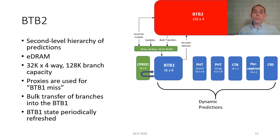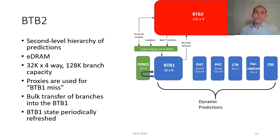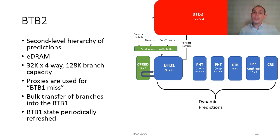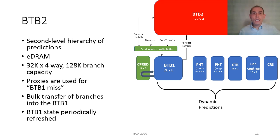Not directly contributing to a prediction bundle, but essentially extending the capacity of the B2B1, is the B2B2. It acts as a second-level hierarchy of prediction metadata, built using eDRAM cells for density, with a capacity of up to 128K branches. Knowing when to transfer branches from the B2B2 into the B2B1 can be tricky. Unlike a traditional level 2 cache accessed upon a level 1 miss, a miss in the B2B1 doesn't necessarily mean there is content in the B2B2 — it could just mean there are no branches within the 64-byte section of code. The branch predictor uses a proxy of three consecutive B2B1 misses to indicate a transfer. These branches are written into the B2B1 through the same read-analyze-write buffer. Even though all surprise branches are installed into the B2B2 as well as the B2B1 to maintain semi-inclusivity, B2B1 state is periodically transferred into the B2B2, with valid but not-hit B2B1 entries sent to the B2B2 for refreshing.